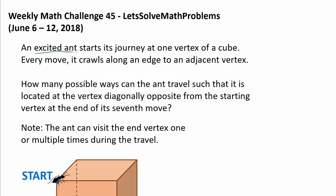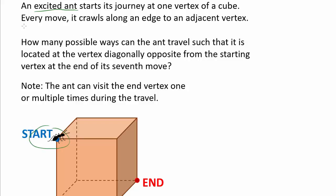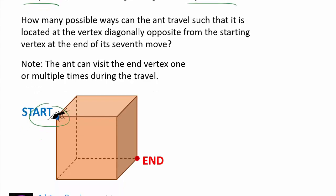We have an excited ant crawling around a cube, starting at one vertex, and every move it travels along an edge to an adjacent vertex. After one move, it may go to any of the three adjacent vertices. We want to find how many possible ways the ant can travel such that it is located at the vertex diagonally opposite from the starting vertex at the end of each 7th move. The ant can visit the end vertex one or multiple times during the travel.